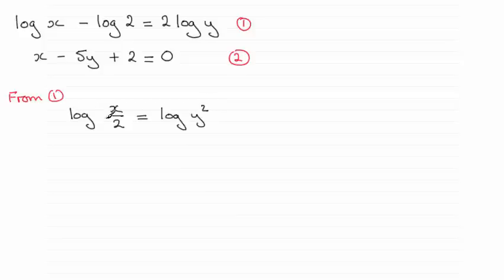Now I've reduced this down to two terms, a log on each side. So I can just anti-log this and I end up with x over two equals y squared. And if I multiply through by two, I end up with x equals two y squared. I'm going to call this equation three.